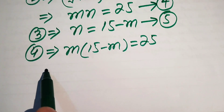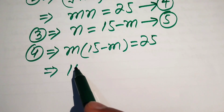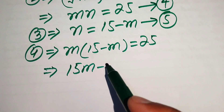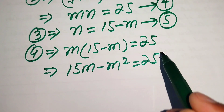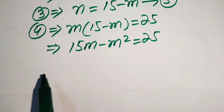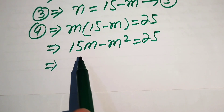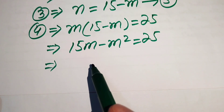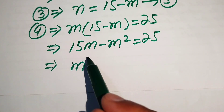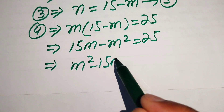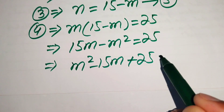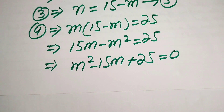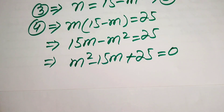Expanding: 15m − m² = 25. Rearranging all terms to one side gives the quadratic equation m² − 15m + 25 = 0.